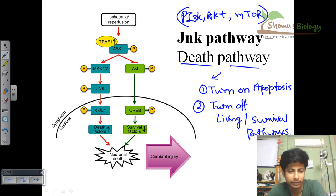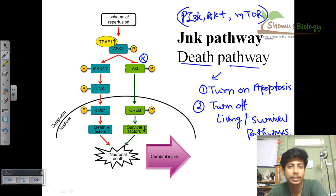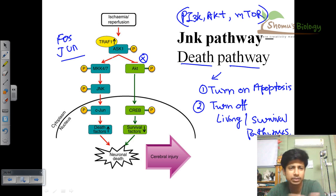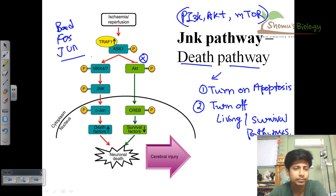In the JNK pathway, it needs to turn the survival pathway off — and that's exactly what it does. In turn, it needs to turn on the apoptotic pathway, meaning you need to turn on the expression of all those protein factors that kill the cell. Examples include FOS, JUN, and BAD — these are examples of proteins that will kill a cell. So they need to turn on all these things.